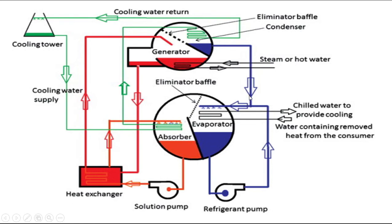In the evaporator, liquid water is sprayed from the top over a bundle of tubes. When this water is sprayed, it expands and part of the water vaporizes. The heat of vaporization is taken from the secondary refrigerant flowing through the bundle of tubes, so the secondary refrigerant gets cooled. The water vapor formed then enters into the absorber for the next cycle.